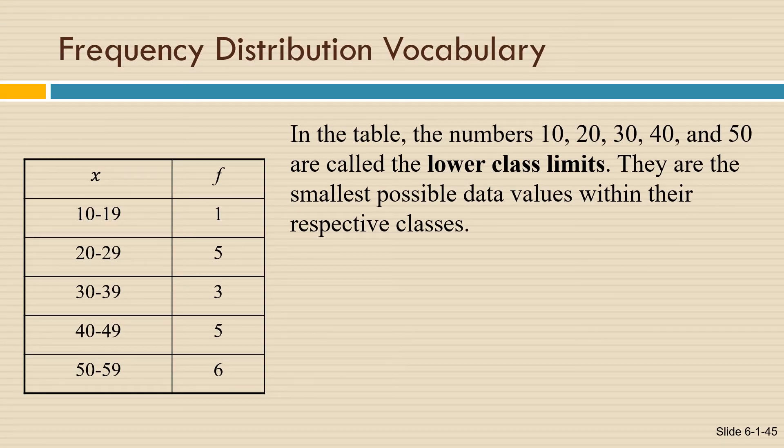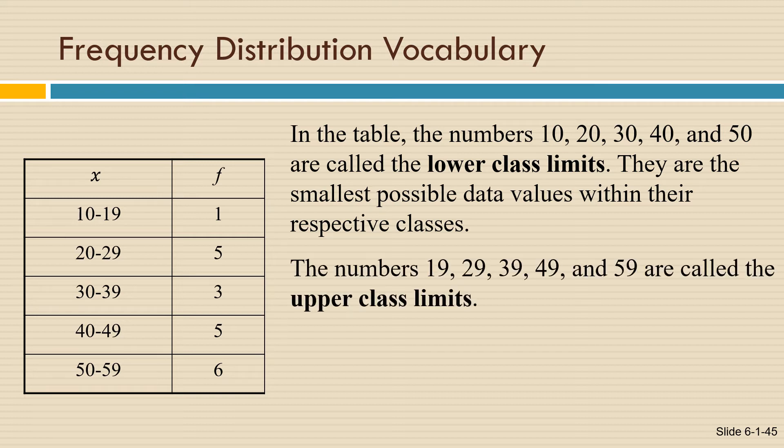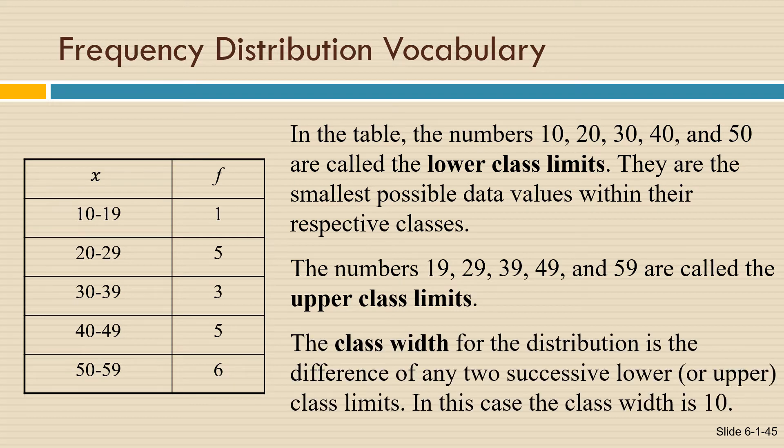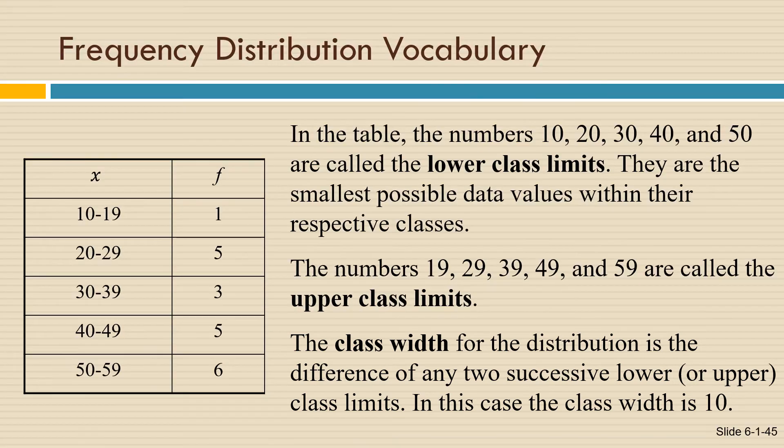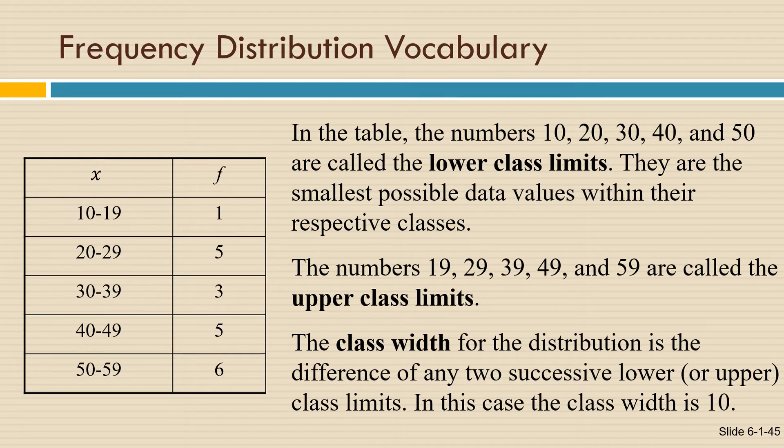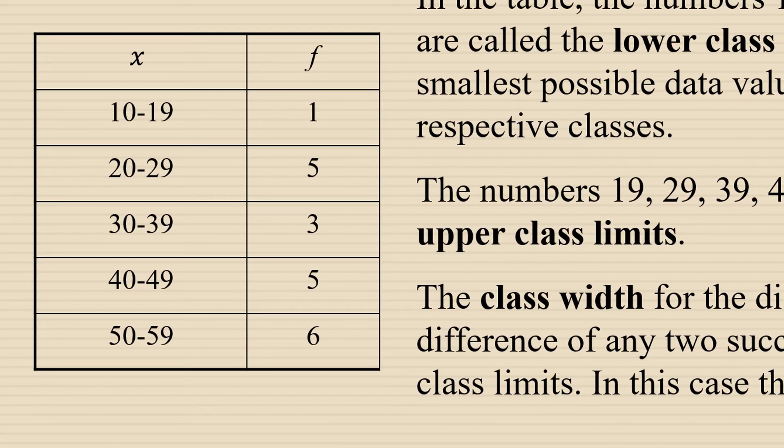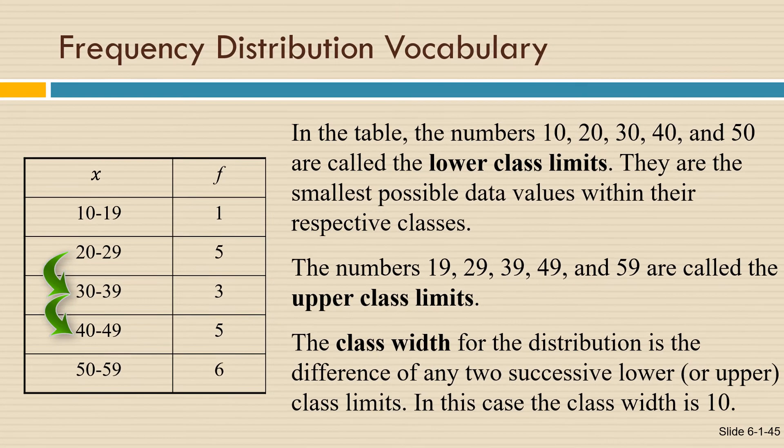The lower class limits are the smallest possible data values within their respective classes. The upper class limits are the largest data values in their classes. The class width is defined to be the difference between any two successive lower or upper class limits. In this case, the class width is 10 because there is a difference of 10 between any two consecutive lower class limits, like 20 to 30 or 30 to 40.